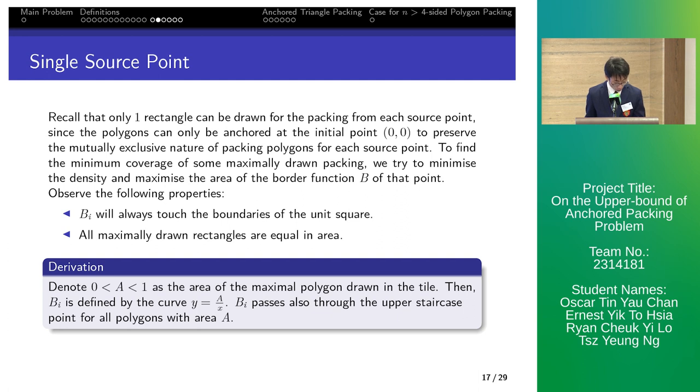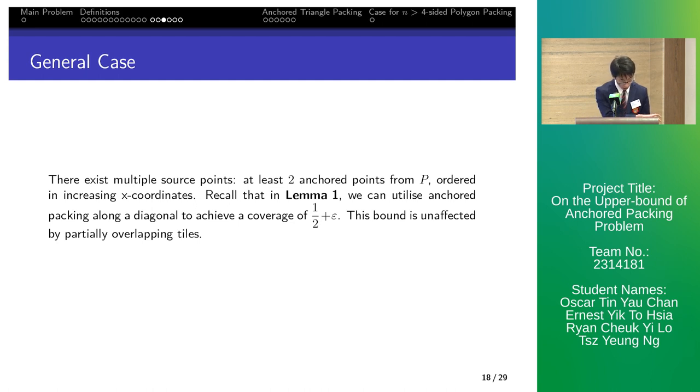We begin with single source point. Recall that only one rectangle can be drawn from the source point in its tile. Our goal is to minimize the density and maximize the area under bi. First, bi touches the square to reduce its density. All maximally drawn rectangles in bi are equal to maximize the area of bi. From these two properties, bi is defined by y cos a over x, where a is the area of maximal polygon drawn.